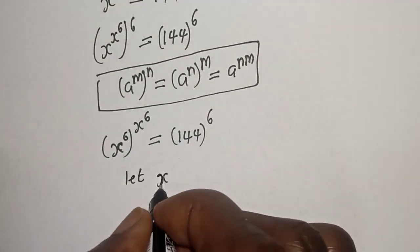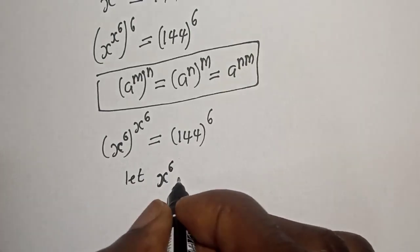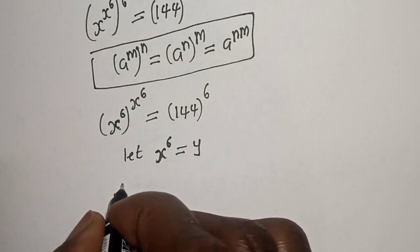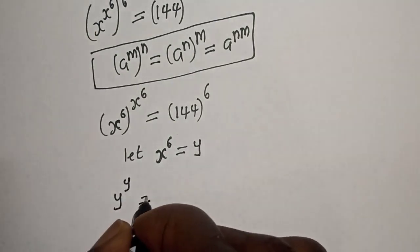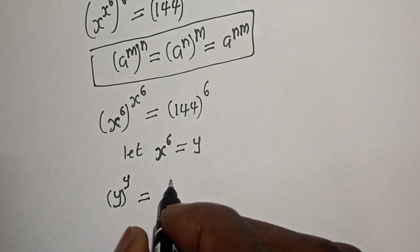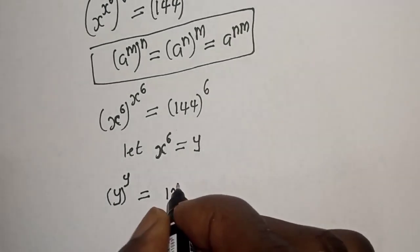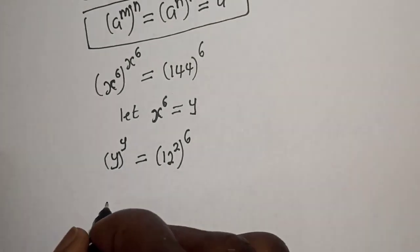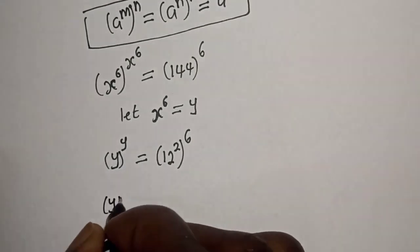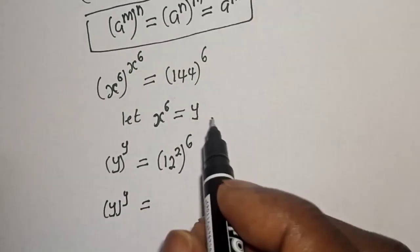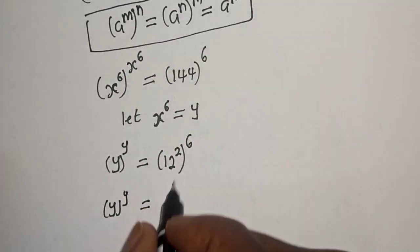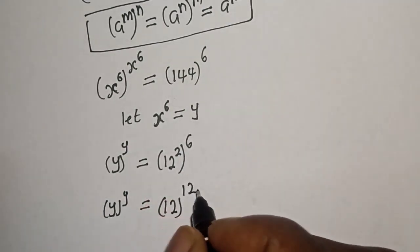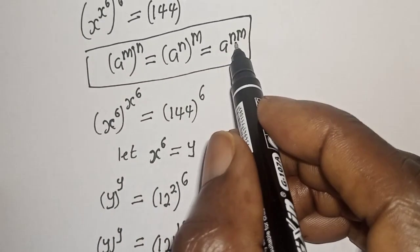Let s raised to power 6 equal y. Then y raised to power y is equal to 144, which can be written as 12 squared to the power of 6. So y raised to power y is equal to 12 raised to power 2 times 6, which equals 12 raised to power 12.